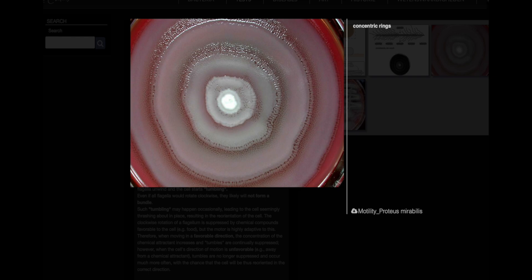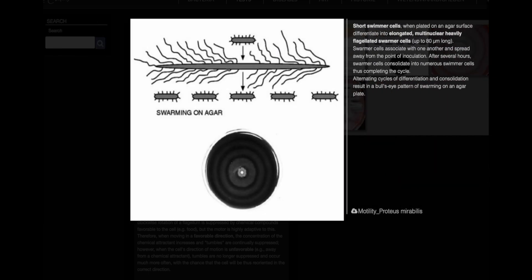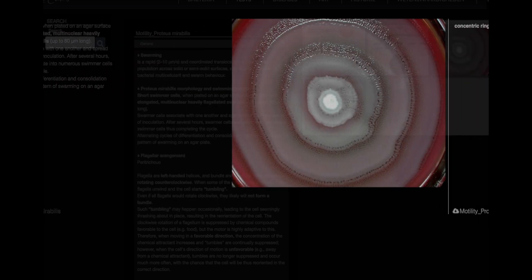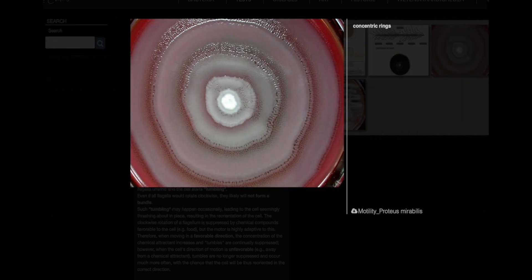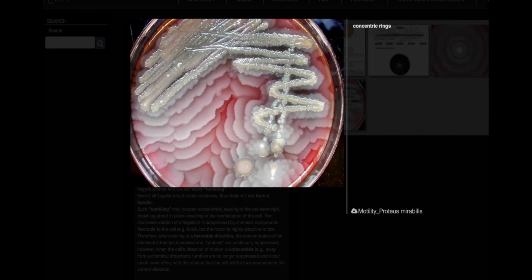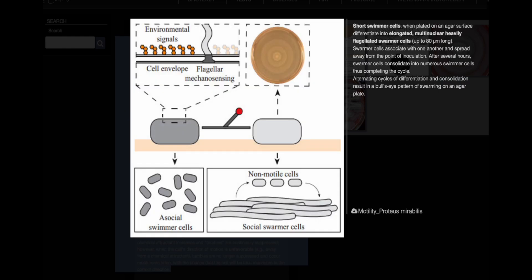The clockwise rotation of a flagellum is suppressed by favorable chemical compounds, such as food. Thus, when moving in a favorable direction, the cell experiences increased attractant concentration and suppresses tumbles. However, when the cell moves in an unfavorable direction, tumbles are no longer suppressed and occur more frequently, increasing the likelihood of the cell reorienting towards a more favorable direction.